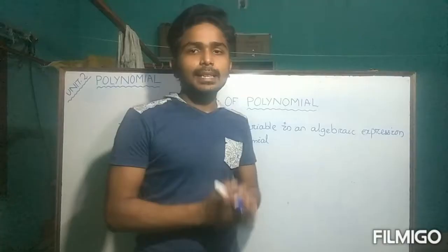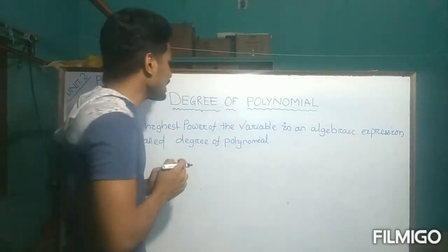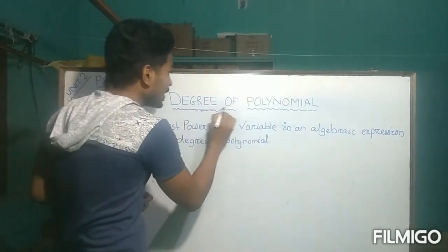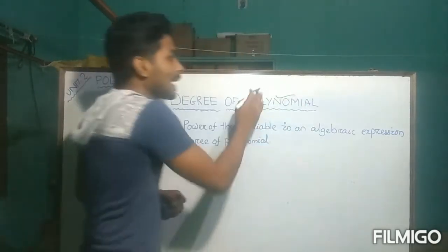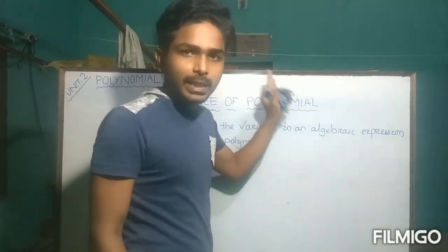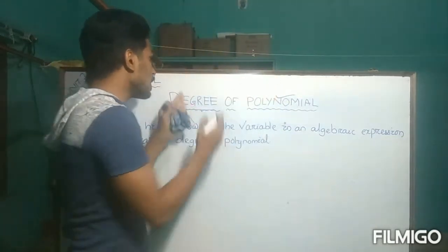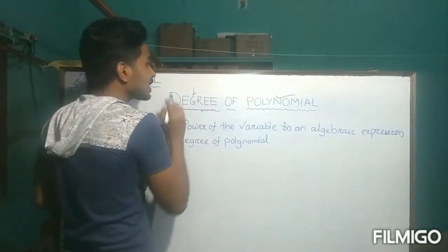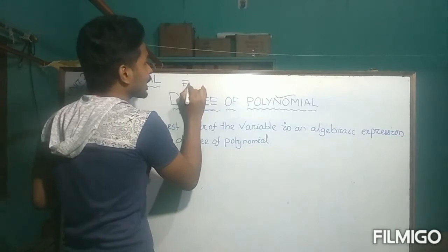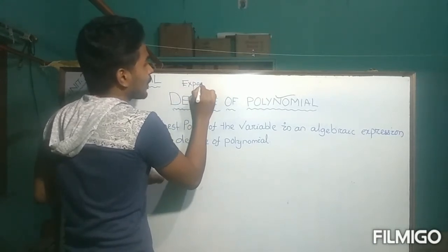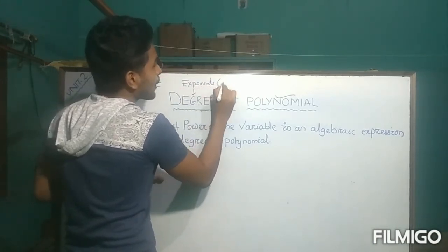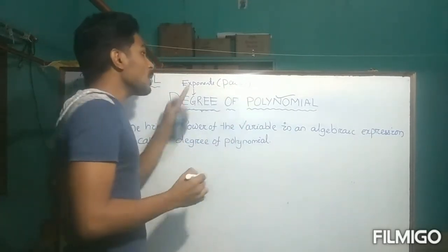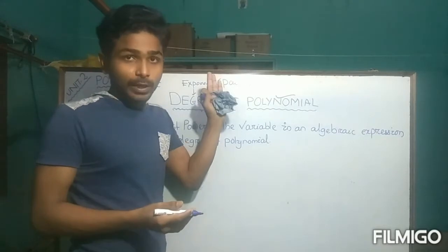Now we move to the next topic: degree of polynomial. A polynomial is an algebraic expression, and the unknown term here is degree. What is the meaning of degree? Degree is nothing but the exponents, also known as power. For example, 2³ means 2 multiplied 3 times, giving 8 — we read it as '2 to the power 3'. Similarly, X² is X to the power 2, and Y³ is Y to the power 3.